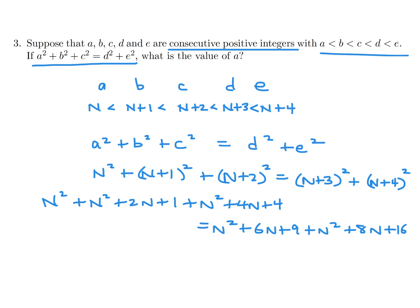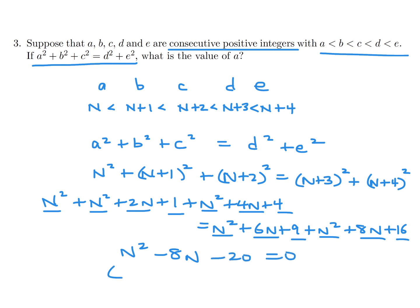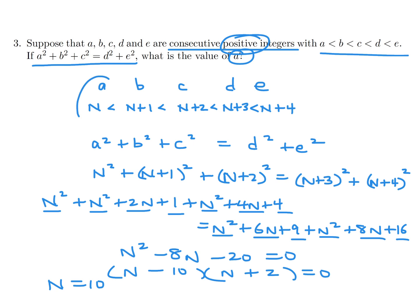Collecting like terms: we have n² terms that cancel, and we get n² minus 6n minus 20 equals 0, which factors as (n - 10)(n + 2) = 0. Since n has to be positive, n is 10. They're asking for a, which is represented by n, so a is 10.